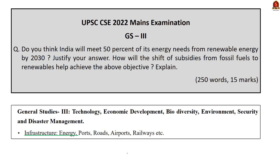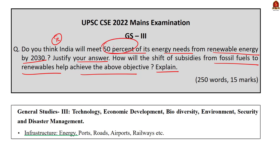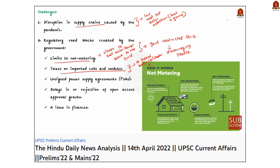Question number 12 in GS Paper 3: 'Do you think India will meet 50% of its energy needs from renewable energy by 2030? Justify your answer. How will the shift of subsidies from fossil fuels to renewables help achieve this objective?' The first part is opinion-based — state your opinion and substantiate it. I am of the opinion that India will not be able to meet 50% of its energy needs from renewable energy by 2030, so I will state supporting facts.